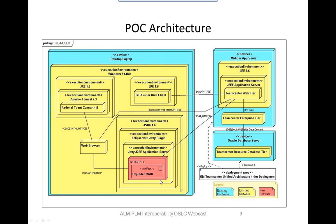The normal TeamCenter implementation has a four-tier architecture. There's the database resource tier — it's an Oracle database in our case. There's an enterprise tier and a web tier that runs in a server environment in a data center. These things are the key points to tie into TeamCenter. This is all production version 9.1 TeamCenter.